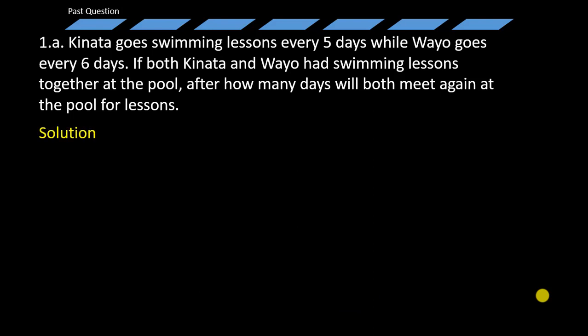Now let's analyze some things. If Kinata goes swimming every five days and Wayu goes swimming every six days, and we are asked to find the number of days it will take before they meet again — consider Kinata: every five days he goes swimming. What we do is keep adding five days to five days and so on and so on.